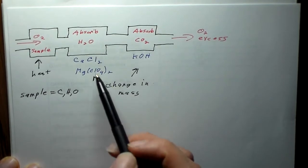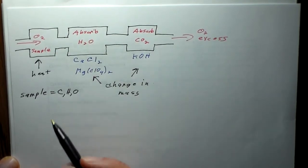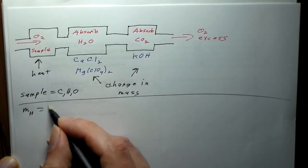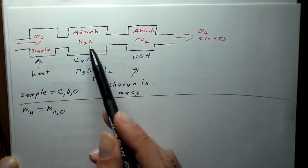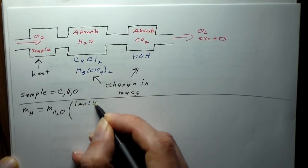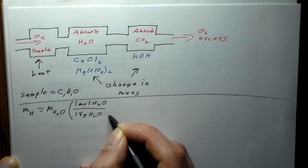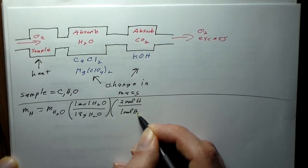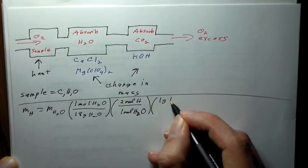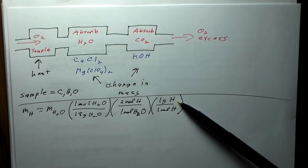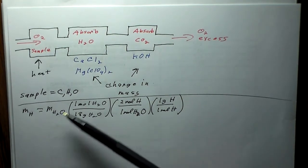When we figure out our change in mass, we figure out how much hydrogen we have. The mass of hydrogen in the sample equals the mass of water absorbed, multiplied by: one mole of H₂O is 18 grams, times two moles of hydrogen atoms per mole of H₂O, times one gram of hydrogen per mole of hydrogen atoms. Note we're dealing with individual hydrogen atoms here, not H₂ — plain old hydrogen, and later we'll see plain old oxygen as well.